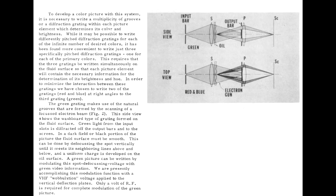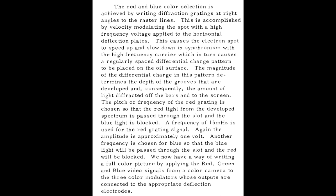This is the bit where it describes what they're doing. Basically they're writing multiple diffraction gratings onto the surface of the oil, splitting it down to primary colours. They're writing the red and blue at right angles to the third green grating. The green grating makes use of the natural grooves formed by the scanning of the beam — the raster — and they're modulating the spot focus for the green. The red and blue are writing different diffraction gratings at right angles to the raster.